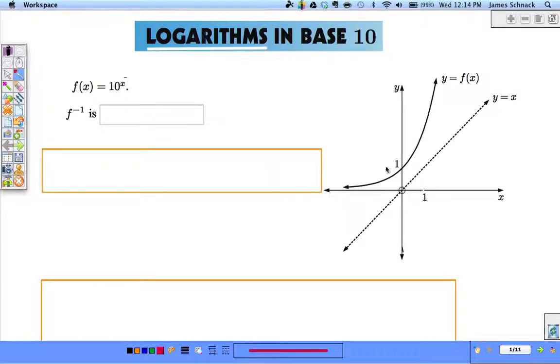Base of 10, x is up in the exponent. The graph is right here. 10 to the 0 is 1, 10 to the 1st would be 10.